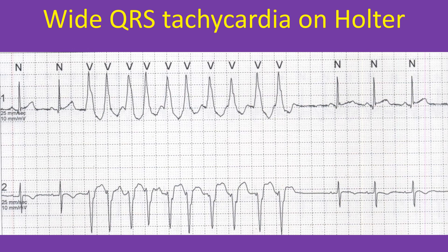Any wide QRS tachycardia is taken as ventricular tachycardia until proved otherwise. There is a short pause at the termination of the tachycardia before the sinus rhythm takes over. There is a little more irregularity in the tachycardia run than usual, as ventricular tachycardias are fairly regular. Another possibility to consider when there is an irregular wide QRS tachycardia is atrial fibrillation with ventricular pre-excitation causing a wide QRS tachycardia.